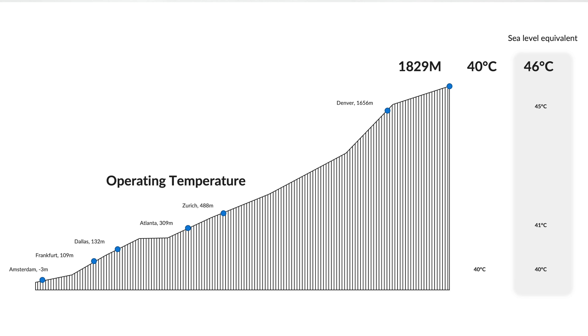The second parameter that influences every single electronic component is the elevation, for a simple reason: cooling capability is a function of air pressure, and therefore altitude. We use a simple rule of thumb to say that 1000 feet (around 300 meters) is equivalent to one additional degree Celsius at sea level. Consequently, to support a system at 1800 meters of altitude, you need to test it at maximum temperature plus 6 degrees — in our recent routers, that's 40 + 6 = 46°C.